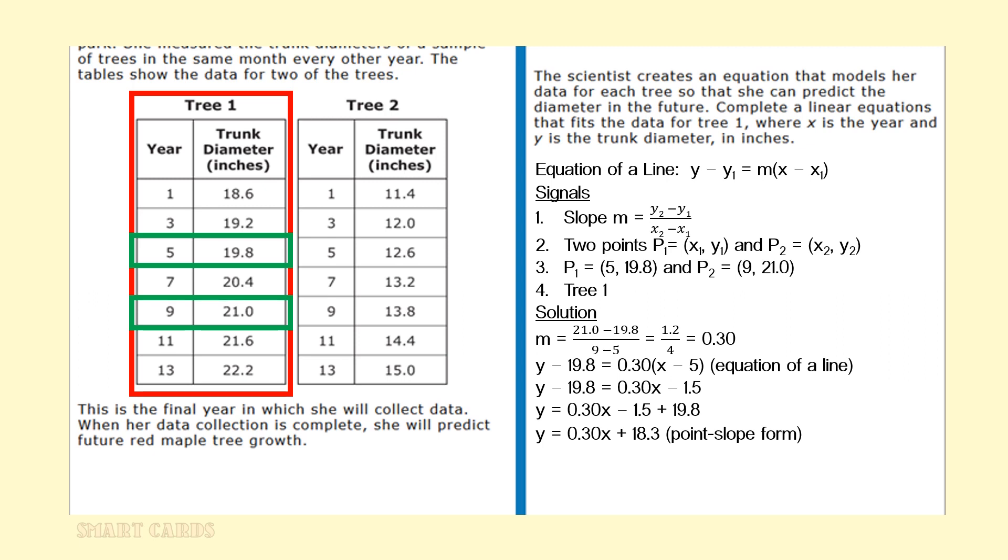From this point, it's just algebra to place this formula in the form of the point slope form. We do so by multiplying the slope times x minus 5 to get y minus 19.8 equals 0.30x minus 1.5. We then add 19.8 to both sides, and then when we do the subtraction with 1.5, we're going to get in point slope form y is equal to 0.30x plus 18.3. This is the model that she can use to predict trunk diameter in the future.